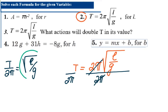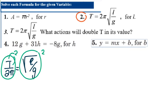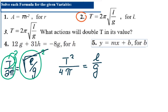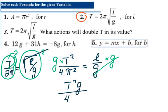Then I square both sides to eliminate the square root. Squaring every term gives me T²/(4π²) = l/g. Now I multiply both sides by g, and g cancels on the right, leaving l = T²g/(4π²). So I've solved for l.